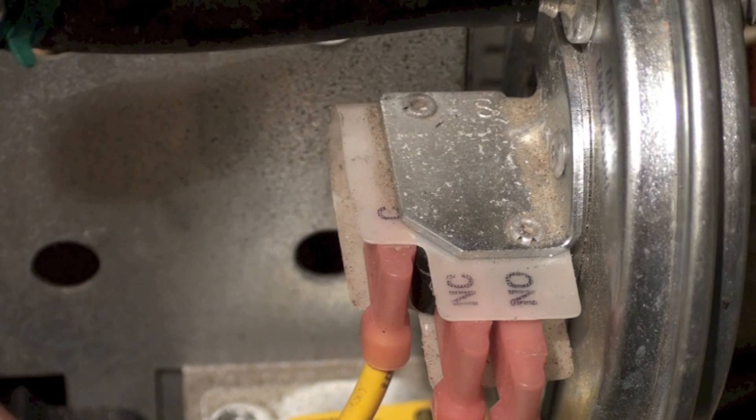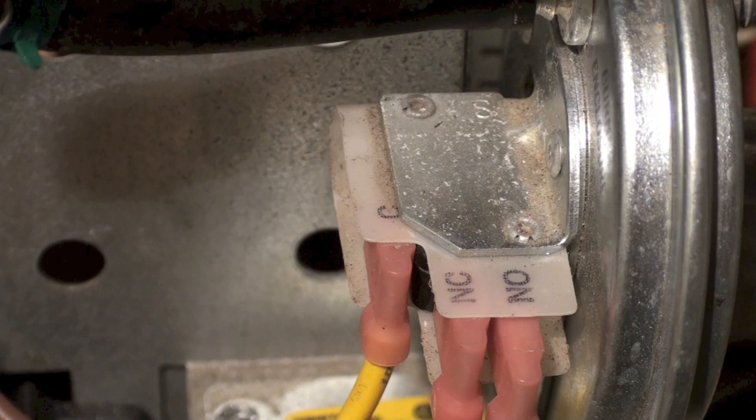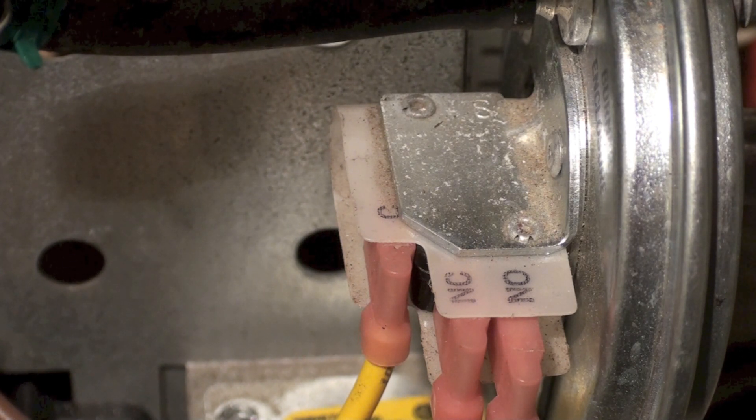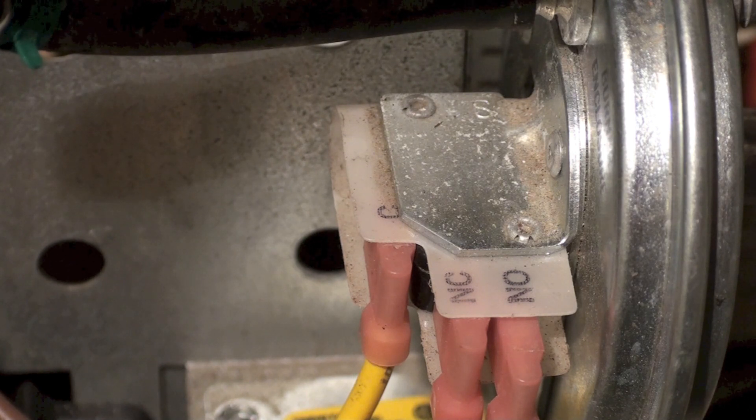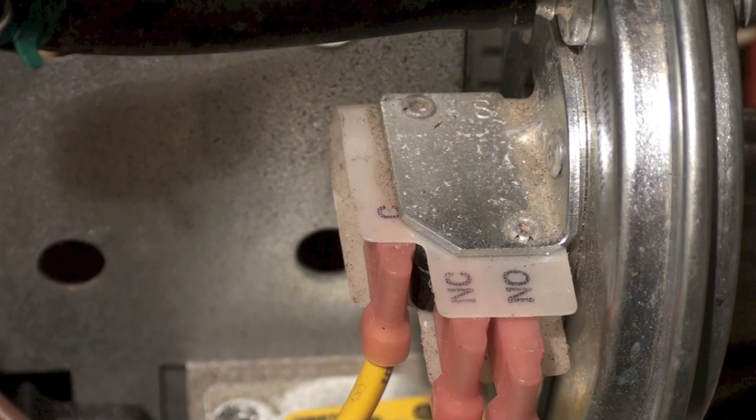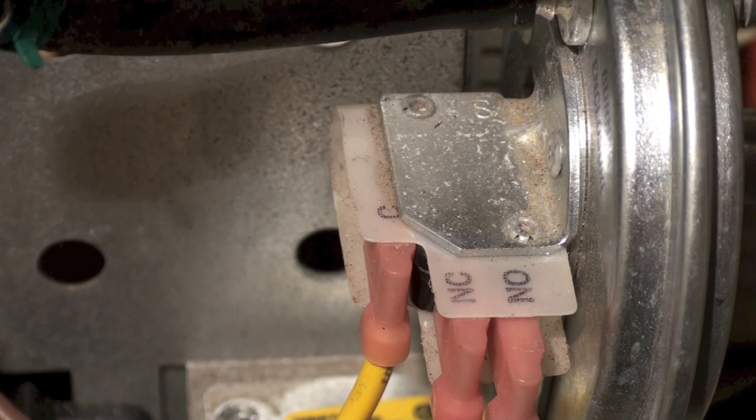So if this was a single pole single throw it would be a normally open switch, and then it would make when the inducer came up to speed. The problem with that is if the pressure switch has stuck into the normally closed position, then there's no way to determine that happened. So the furnace would simply start off with a pressure switch already closed, and even if the inducer failed it would be closed, so then the furnace would fire off.